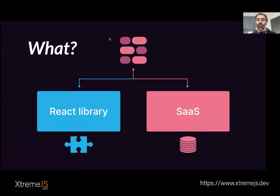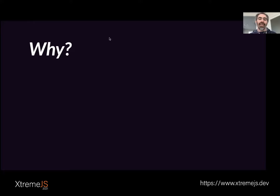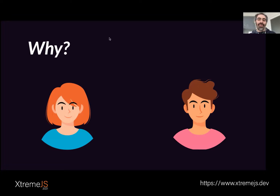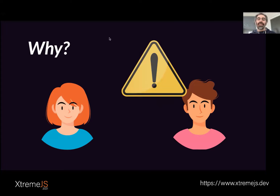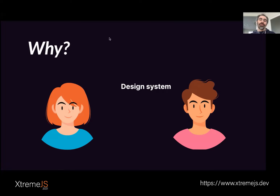Why did we create it? Here's a story. Kate is a content creator, and John is a front-end web developer. Kate loves to have a blank WordPress page where she can create content freely, but that's a problem for John because he wants to ensure Kate cannot break the design system or the responsive design. He doesn't want to use a monolithic CMS, but a modern system with APIs as a service.